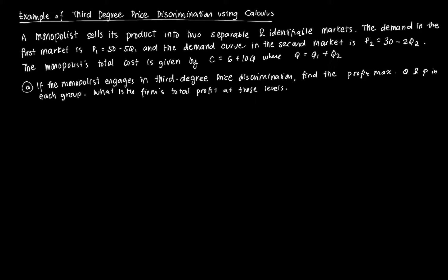Suppose a monopolist sells its products into two separable and identifiable markets. The first group has a demand function P1 equal to 50 minus 5Q1, and the second group has a demand function P2 equal to 30 minus 2Q2, where Q is the quantity demanded in each market and P is the price charged in that market. The total cost of the firm is equal to 6 plus 10Q, where Q is total output — the sum of output for the two markets.